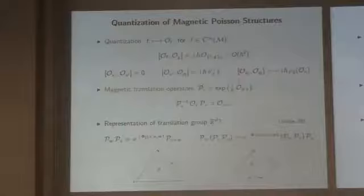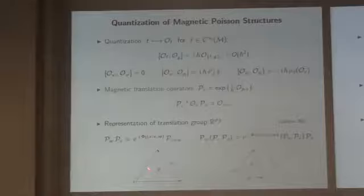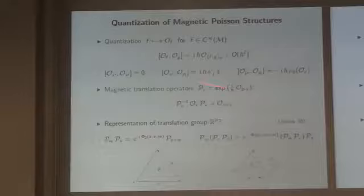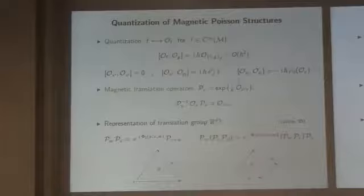You look at the operators that implement translations by a fixed vector in R^d and ask: do these form a representation of the translation group? The standard physics calculation argues that they don't — they form something like a projective representation. The phase is the integral of the magnetic field over a triangle, a two-simplex, formed by the two translation vectors. In general, these operators don't associate because of the Jacobiators, and the violation of associativity is controlled by the curvature — the integral over a three-simplex, or the magnetic charge through a tetrahedron.